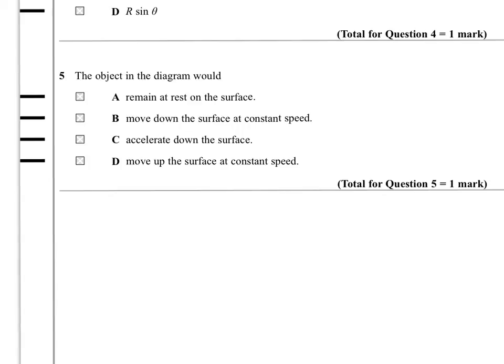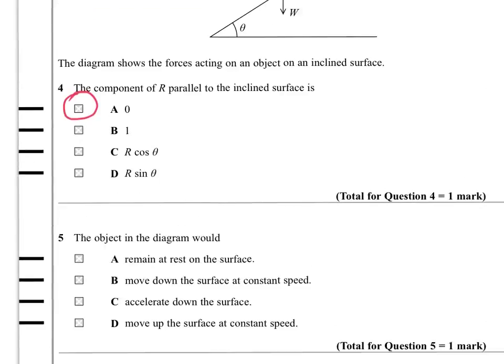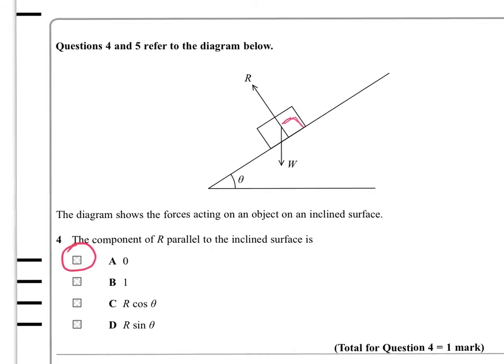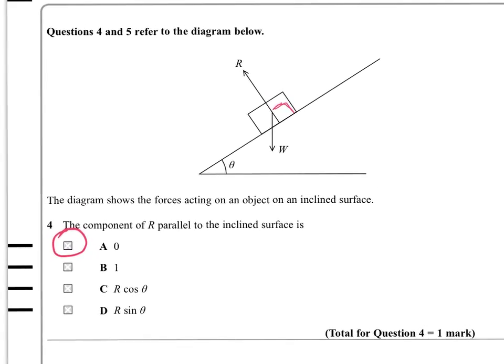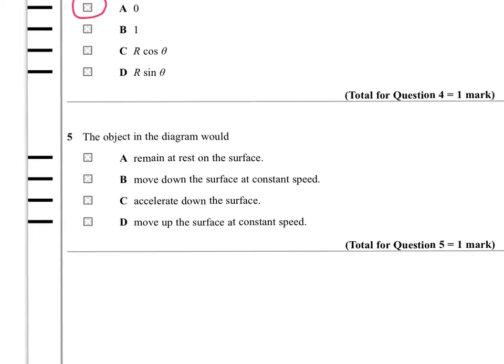The object in the diagram would remain at rest on the surface, move down the surface at a constant speed, accelerate down the surface, or move up the surface at a constant speed. Well, clearly they're not showing any force acting up. So what you're really going to get, there's no force acting this way. So as a result of that, you're going to get a component of W acting down the slope. And that's going to cause the object to accelerate down the slope. And that's going to be C.